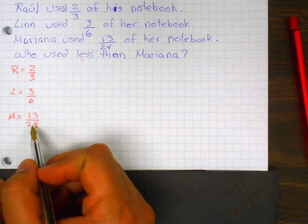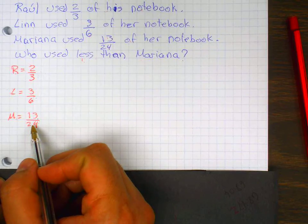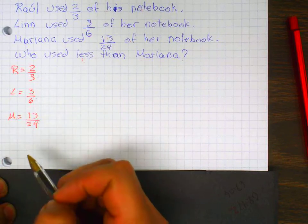So I need twenty-four. I'm going to use my new denominator to change the other fractions.